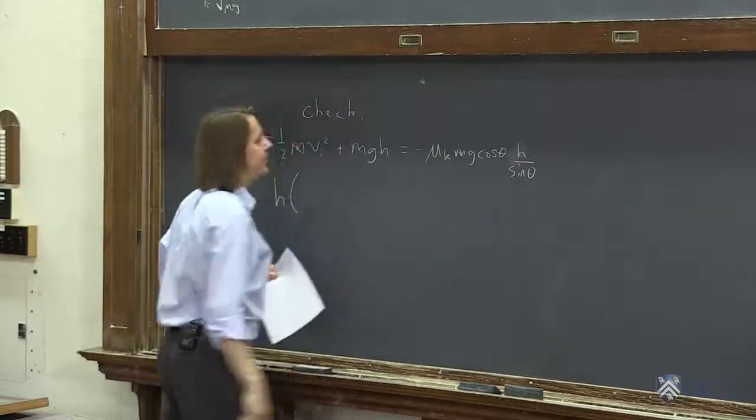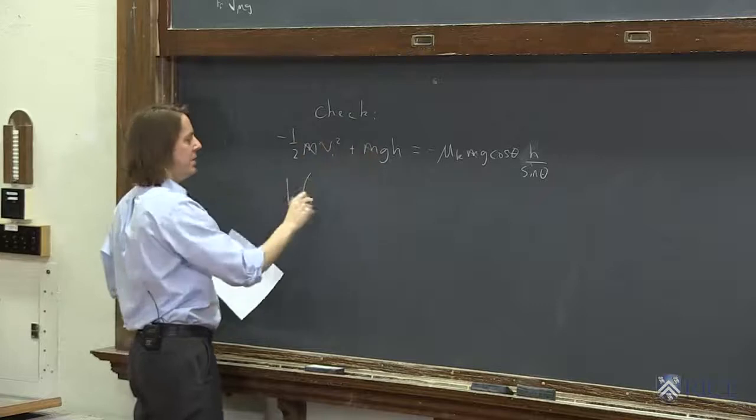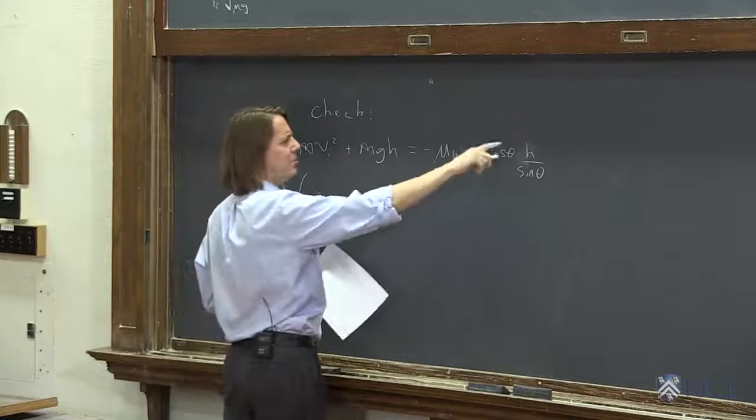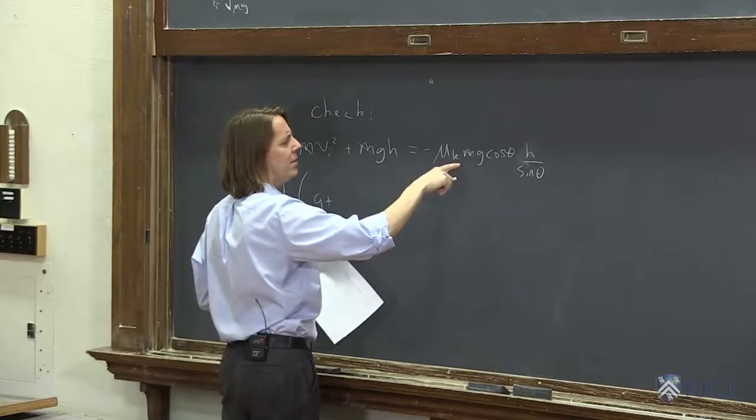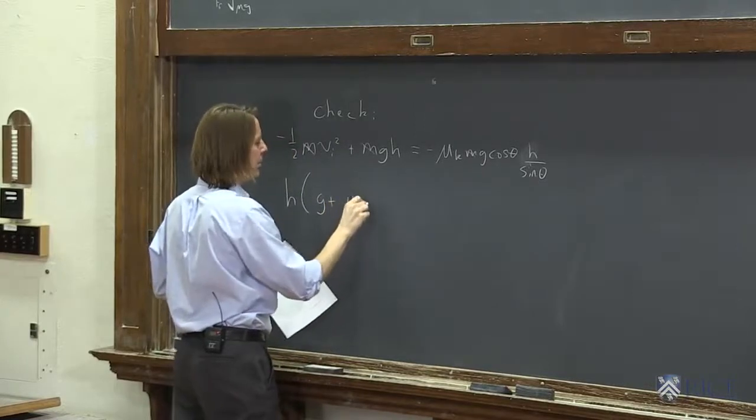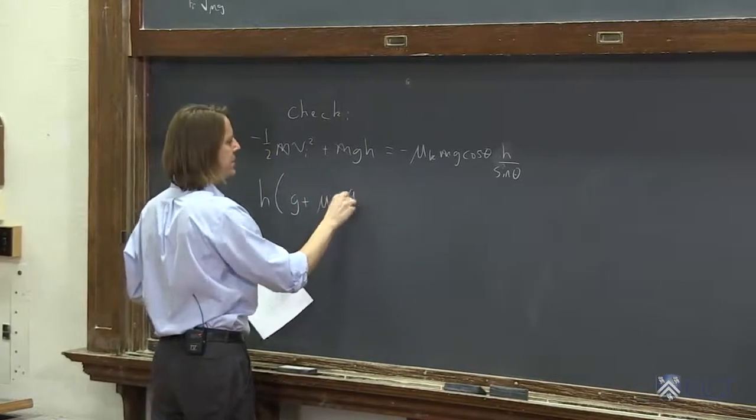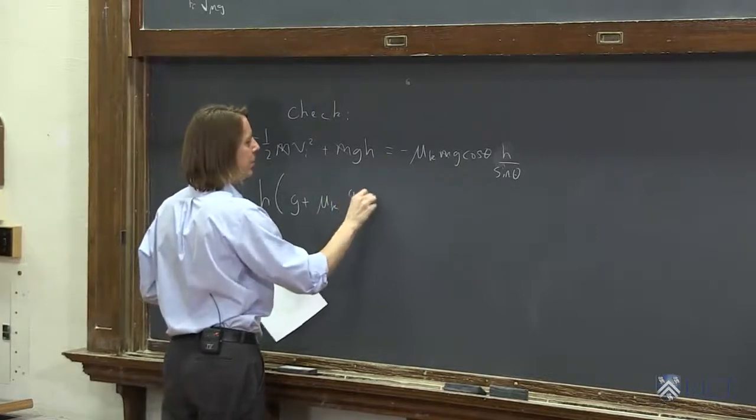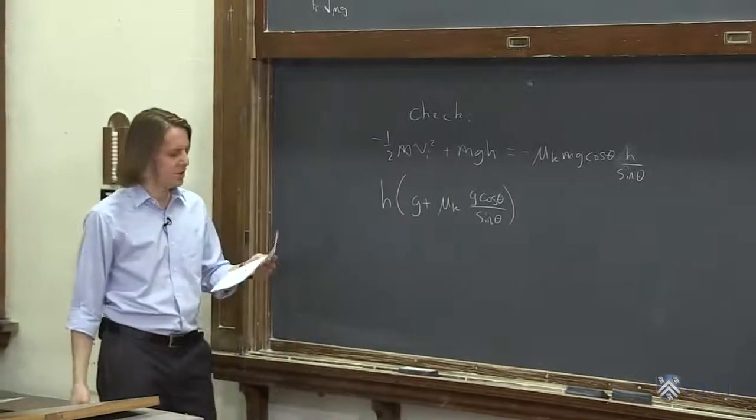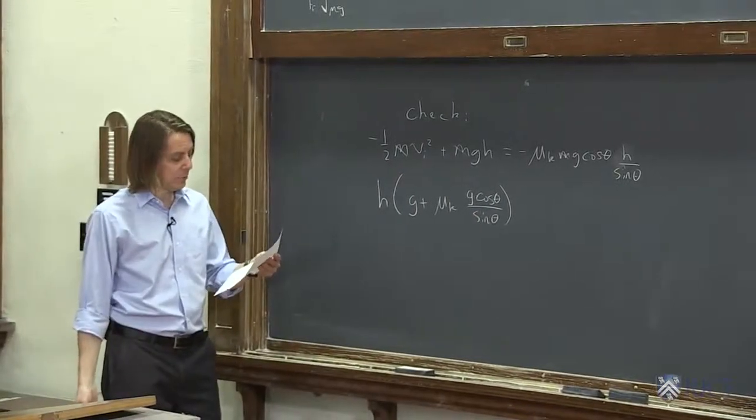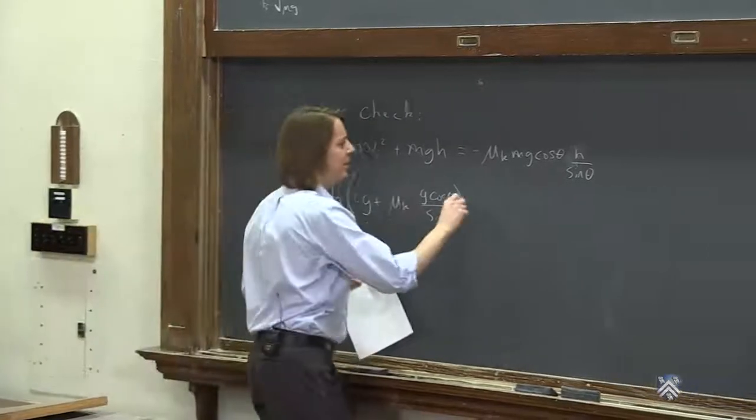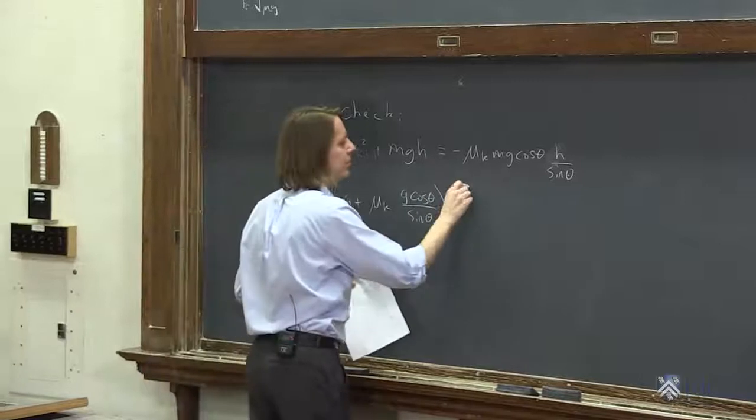What's left here? g. And what about this term that we brought over? We pulled out an h, we pulled out a g. Mu k. We're pulling an m. Mu k g cosine theta over sine theta. Mu k g cosine theta over sine theta. And I just realized, of course, we could have pulled out a g as well. I meant to do that. I apologize deeply for that. I forgot to in my notes as well. The other side came over here, and we canceled the m, so that's vi squared over 2.